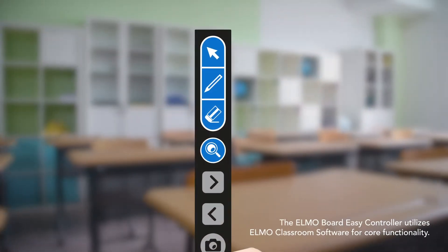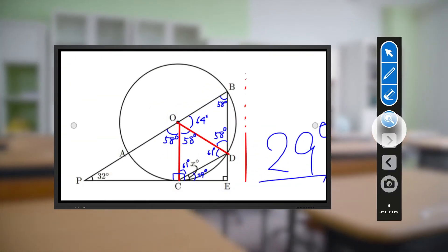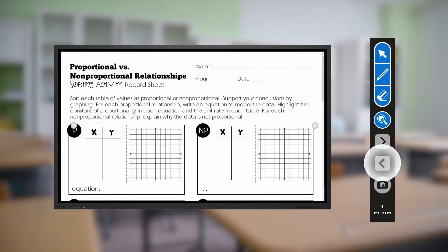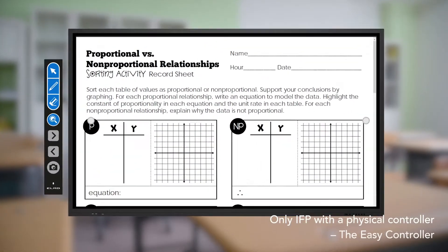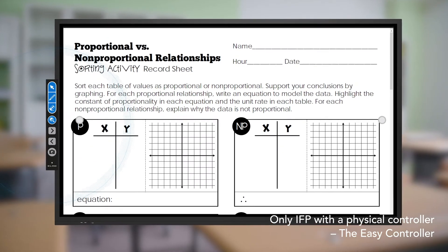The ELMO Board comes with an easy controller that provides one-click access to cameras, a pen and eraser, scale images, or scan forward, backward. The ELMO Board is the only IFP on the market featuring an easy-to-use physical control panel outside of the screen.